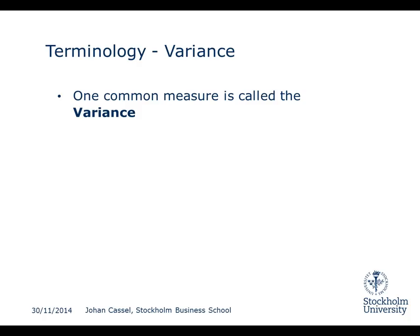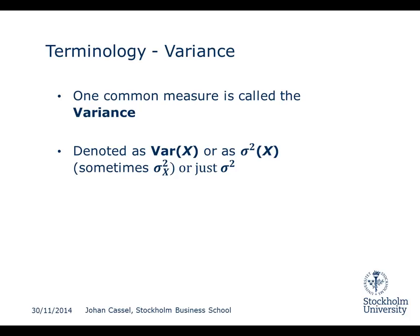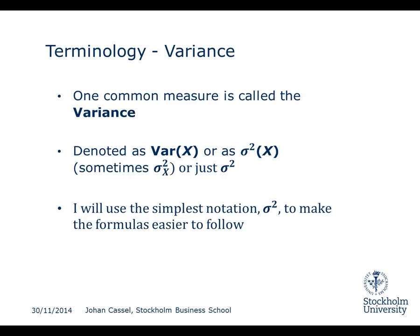One common measure — or the most used measure — is called the variance of a random variable. We denote it as VAR of x, which stands for variance of x, or we use the Greek letter sigma and write it as sigma squared of x, or with an x subscript, or just sigma squared. I'm going to use that simple notation to make the formulas easier to follow, but it doesn't matter — I could also use the VAR(x) notation.